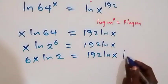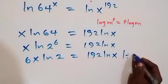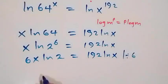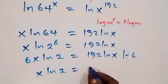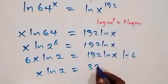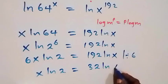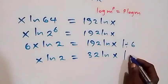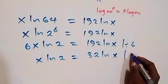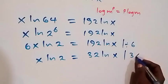From here, we can divide both sides by 6. That is, here we have x ln 2 left, which is equal to 32 ln x. And here, let's divide both sides by 32x.